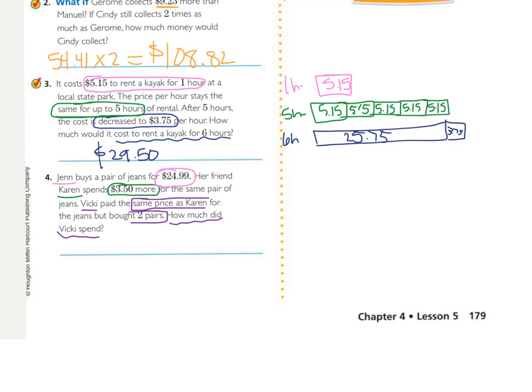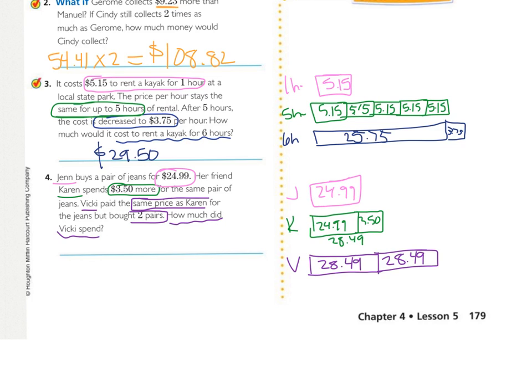And, number four, Jen is $24.99. Karen is $24.99, plus an additional $3.50. Vicky is what Karen was, $28.49, but twice. And that gives me my final answer of $56.98. It makes sense.